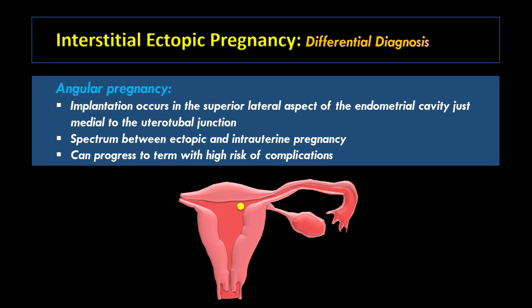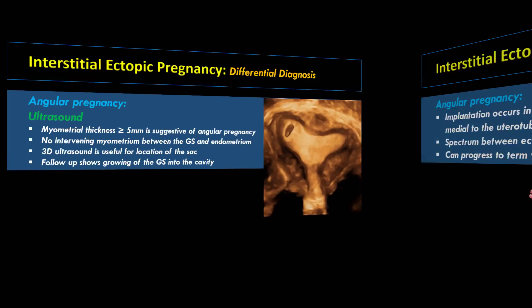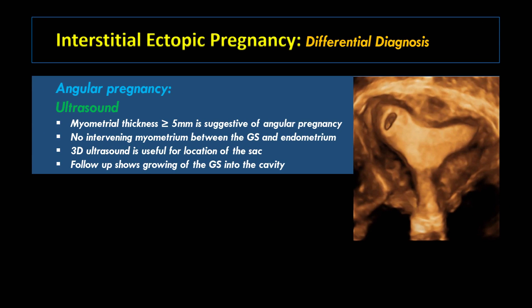The differential diagnosis of interstitial ectopic pregnancy is angular pregnancy. In angular pregnancy, implantation occurs in the superior lateral aspect of the endometrial cavity, just medial to the uterotubal junction. This type of pregnancy is considered a spectrum between ectopic and intrauterine pregnancy and can progress to term with a high risk of complications. On ultrasound, the gestational sac is seen at the superior lateral aspect of the endometrial cavity, surrounded by a myometrial thickness greater than 5 mm. In angular pregnancy, there is no intervening myometrium between the gestational sac and the endometrium because the sac is implanted in the endometrial cavity. 3D ultrasound is very useful for locating the sac, and follow-up ultrasound shows growing of the gestational sac into the endometrial cavity.